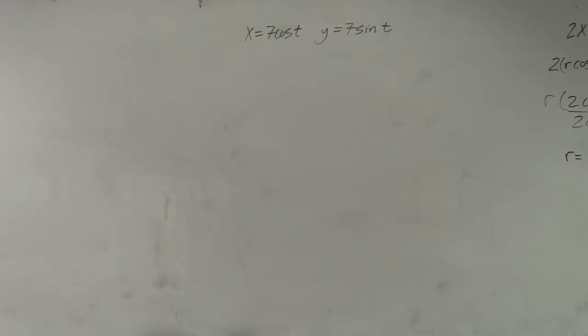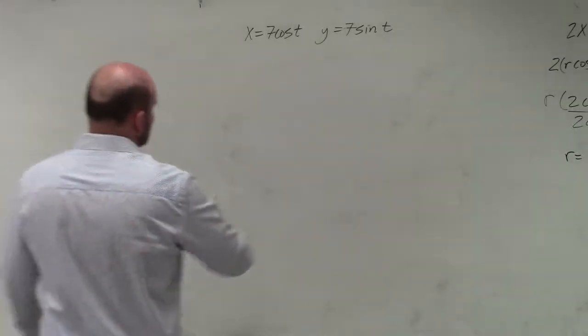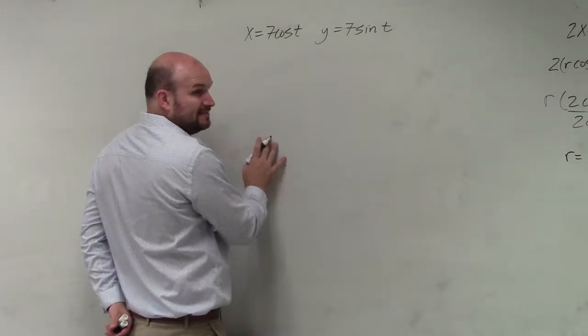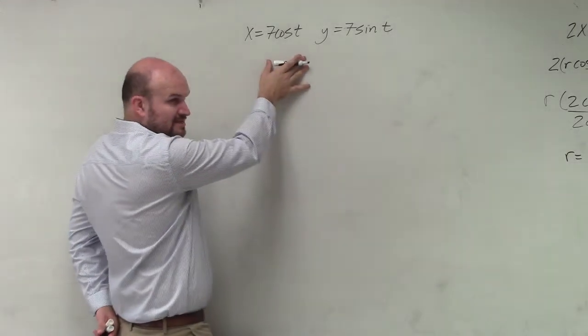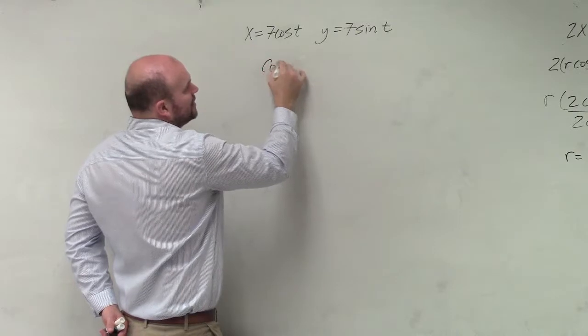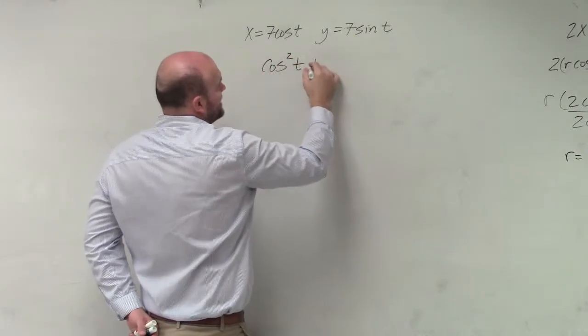So there was another formula that we remember that helps us, which was our Pythagorean identity. So typically we'll be solving for t, but in this example we can use our trigonometric identity.